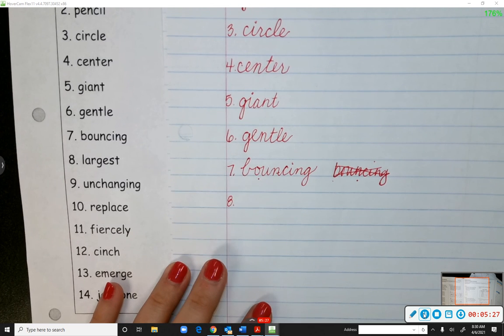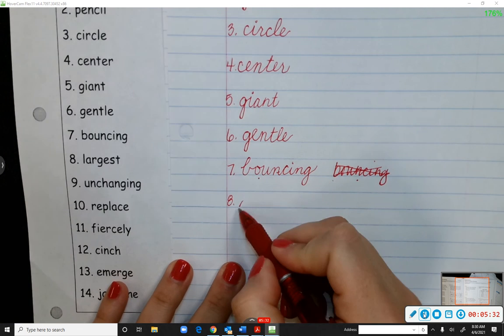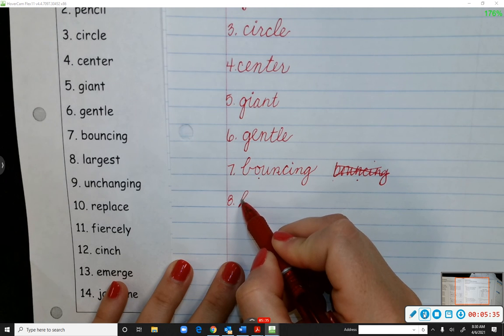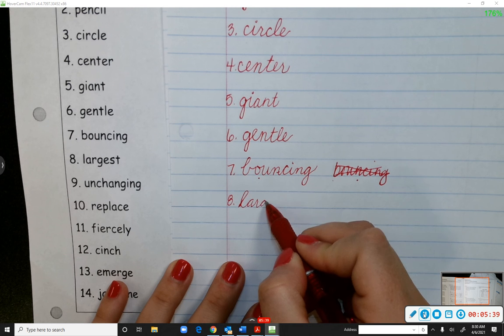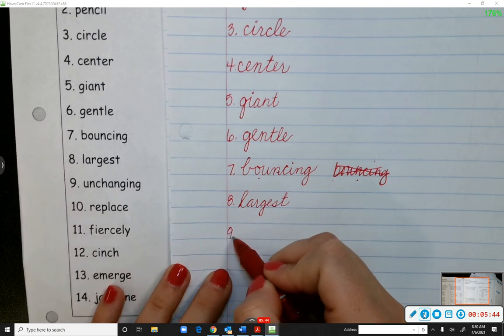So eight, largest. So L, we come start at the bottom of the line. We're going to come up, make a tiny loop towards the back. Stay connected the whole way. We don't lift up our pencil. Okay?